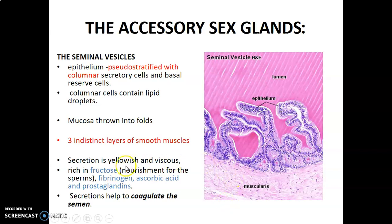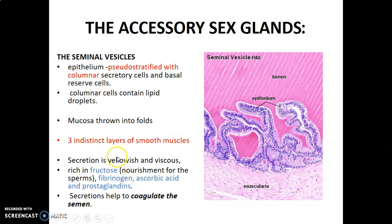Then we go to the accessory sex glands. The first one is the seminal vesicle. The epithelium of the seminal vesicle is pseudostratified columnar with secretory cells and basal reserve cells. The columnar cells contain lipid droplets, and the mucosa is thrown into folds. There are three indistinct layers of smooth muscle. The seminal vesicles secrete a yellowish and viscous fluid rich in fructose to nourish the sperm, and also containing fibrinogen, ascorbic acid, and prostaglandins. The secretions of the seminal vesicles help to coagulate semen.